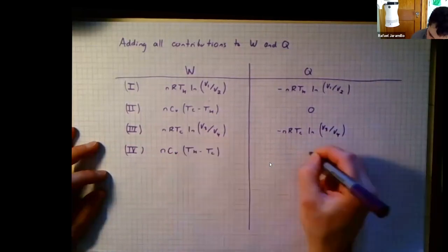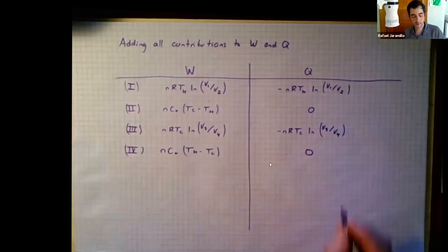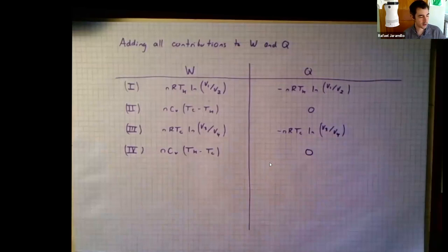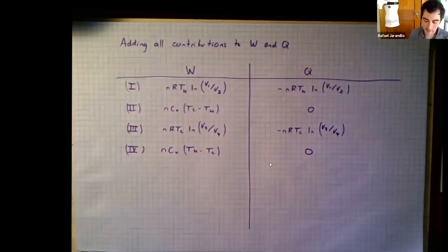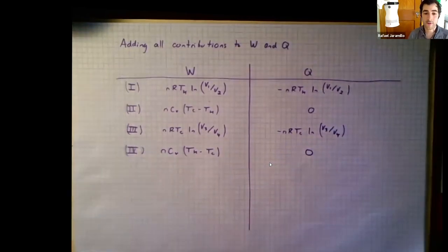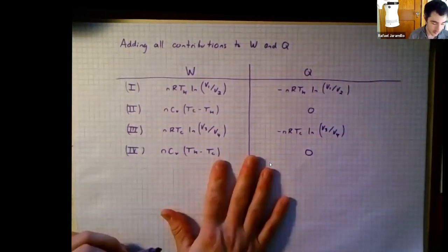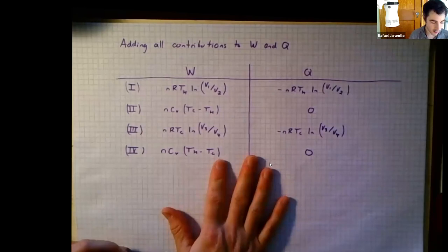That's the table of contributions to heat and work. Now we'll use it to calculate the Carnot efficiency.